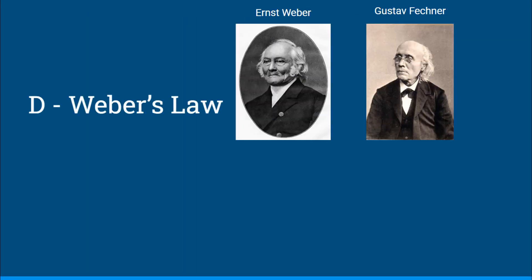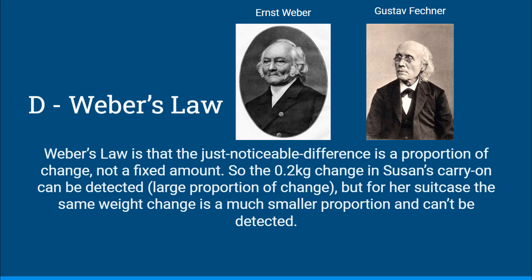This would be Weber's law, named after Ernst Weber by his student Gustav Fechner. Weber's law states that the just noticeable difference is a proportion of change, not a fixed amount. So the 0.2 kilogram change in Susan's carry-on can be detected because it's a large proportion of change, but for her suitcase the same weight change is a much smaller proportion and therefore it can't be detected.